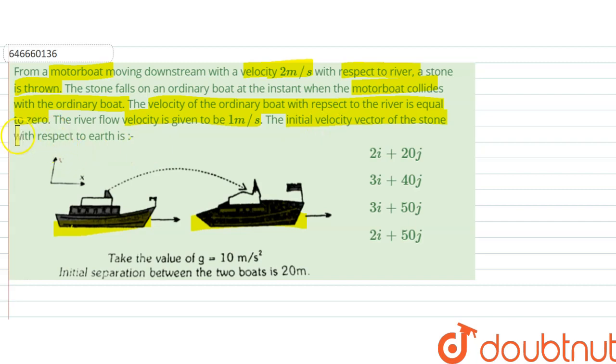The initial velocity vector of the stone with respect to earth is how much? So what is the initial velocity vector? First of all, what is given is initial separation between two boats is 20 meter.